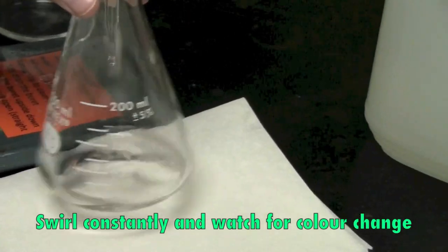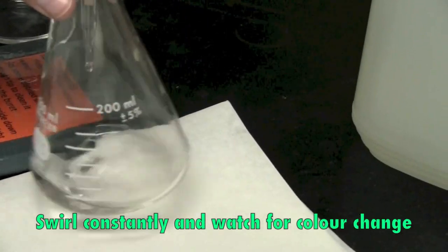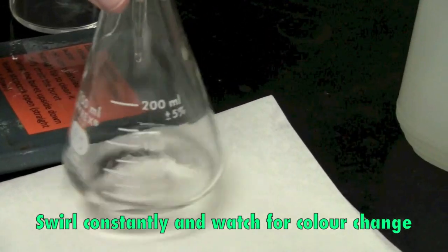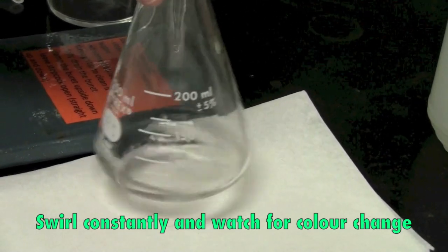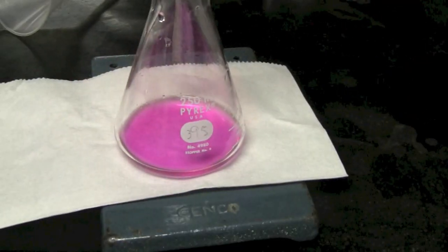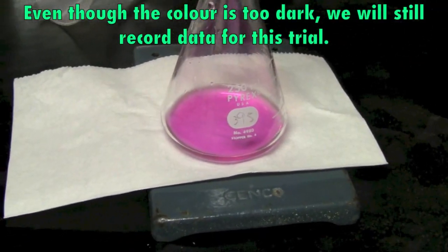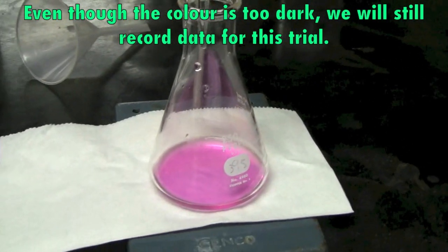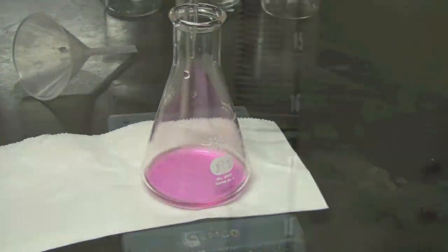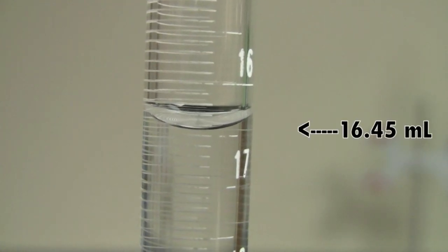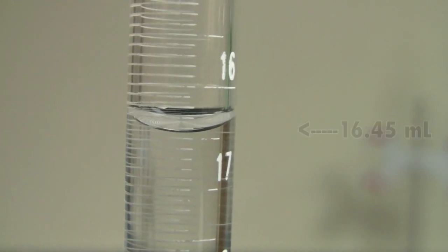And the point of using an indicator is so that we can see that the pH is changing. This is what we call the neutralization. So you can tell this is a very dark pink color. So we're going to set that aside and we're going to take our final burette reading. So it's around give or take 16.45.